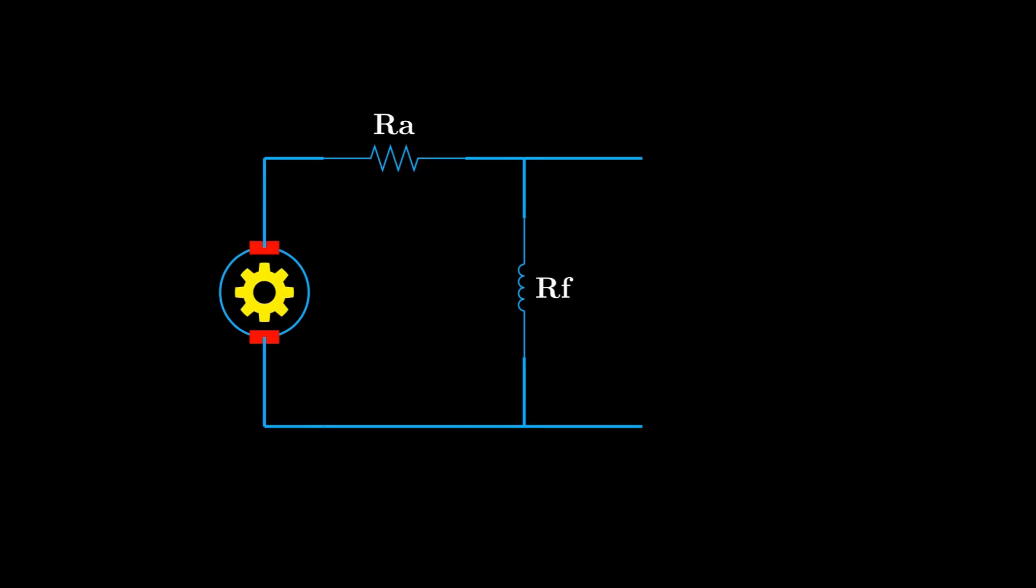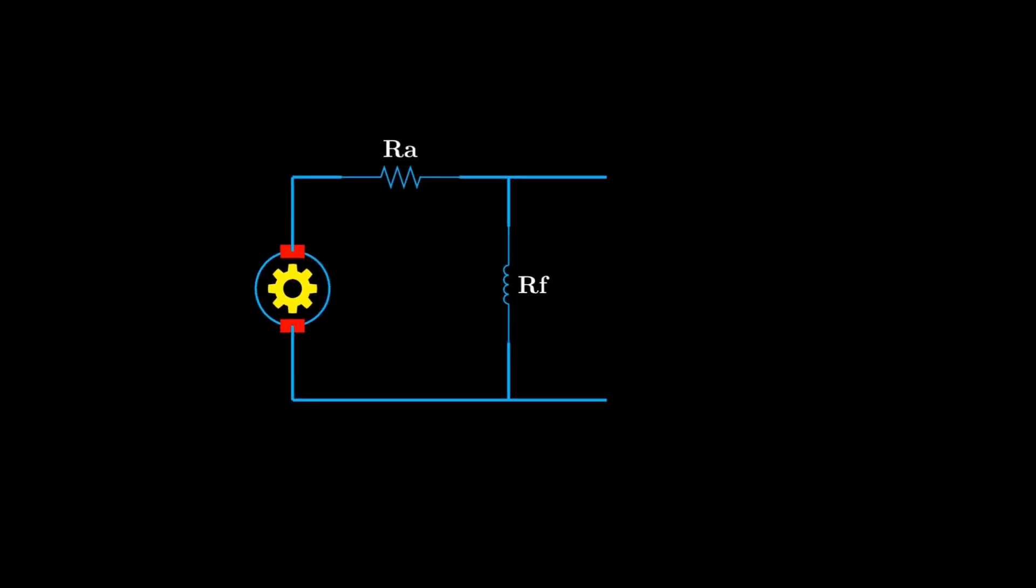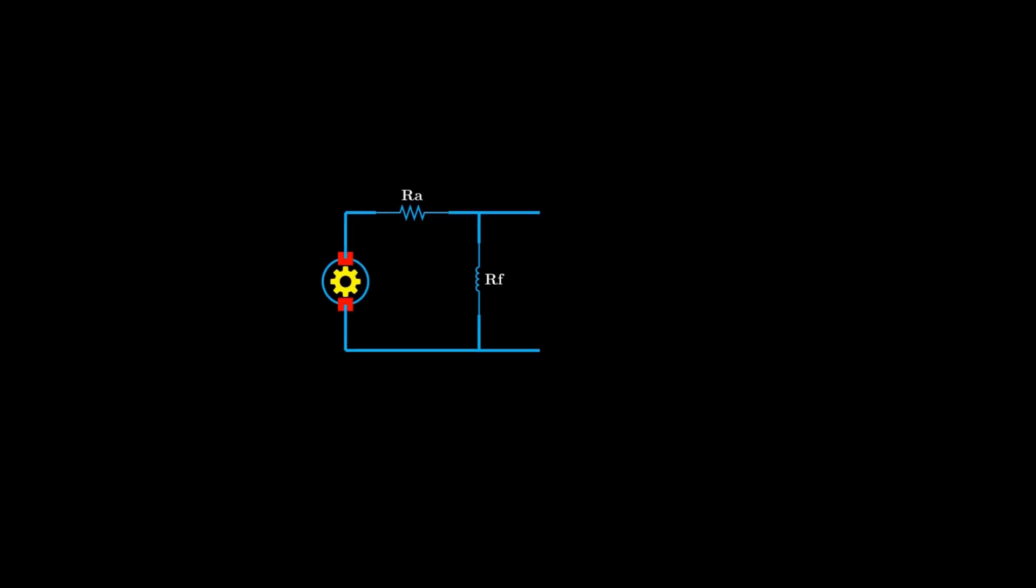Here is the equivalent circuit of a DC shunt generator. Notice the armature and field windings connected in parallel.